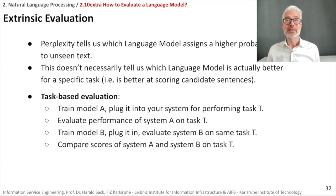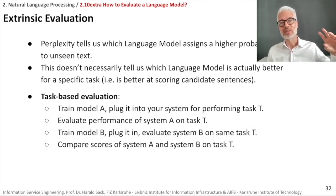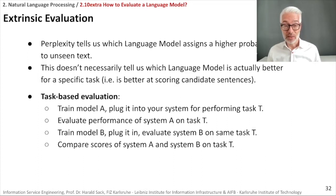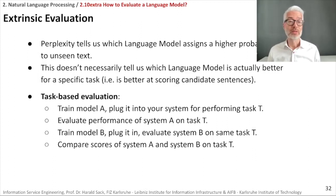Perplexity only tells us which language model assigns a higher probability to unseen text, but it doesn't necessarily tell us which model works better for a specific task. So we do task-based extrinsic evaluation: train model A, plug it into your system for task T, evaluate performance; then train model B, plug it in, evaluate on task T; and compare the scores to determine which model is better.